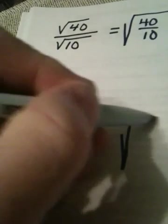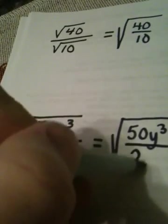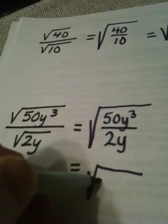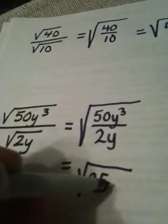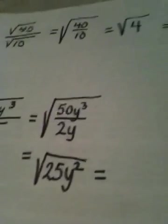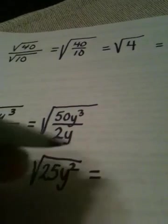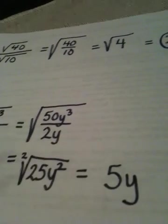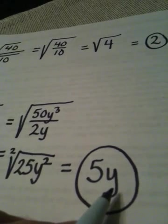Likewise, in this problem, I have two square roots that have been divided. I could put them both back together under one roof. I have 50y cubed on the top and 2y on the bottom. When I simplify what's under the radical, the 50 divided by 2 is 25, y to the third divided by y is y squared. When I take the square root of 25y squared, the square root of 25 is 5, and the square root of y squared, remember the index is 2, 2 divided by 2 is 1, leaves me with y to the first. The reason I don't need absolute value bars is because I was told at the beginning that variables are all positive.